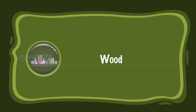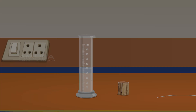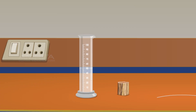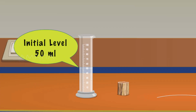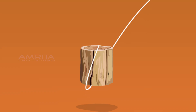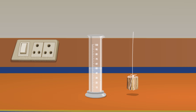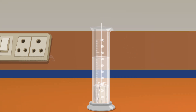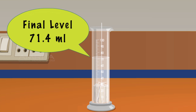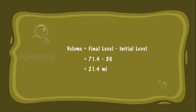Wood. Take a block of wood, a twine, and 50 ml water in a 100 ml beaker. Tie the wood using the twine. Immerse the block of wood into the beaker holding the free end of the twine. The water level goes up to 71.4 ml. The volume of water displaced is 21.4 ml.